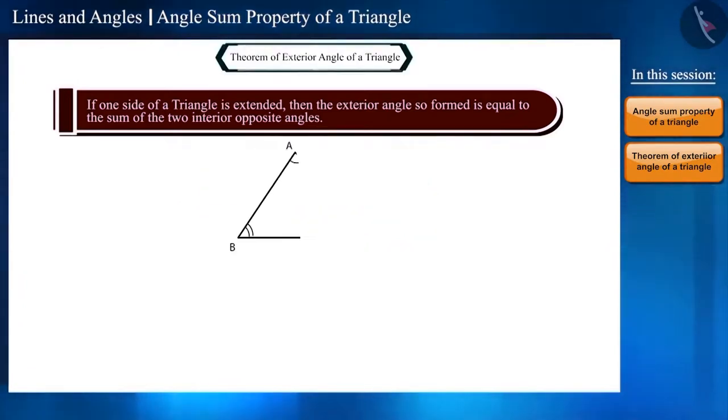So, let us take triangle ABC again and extend the side BC slightly to the point D. We have to prove that the exterior angle ACD is equal to angle BAC plus angle ABC.